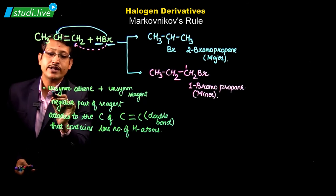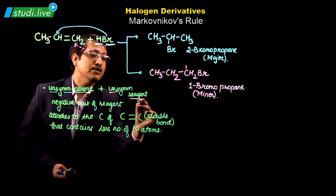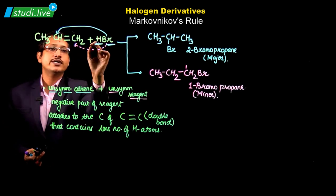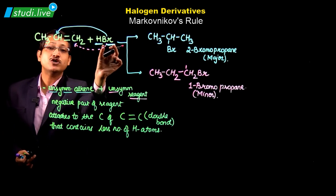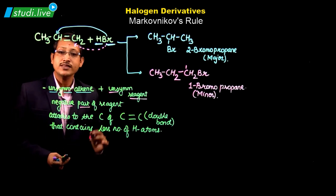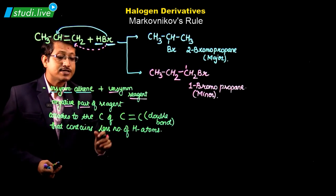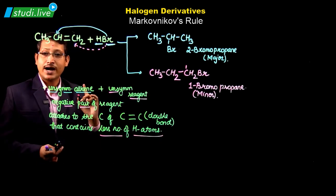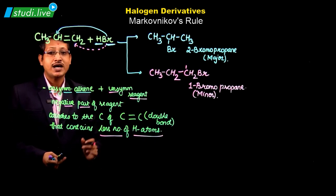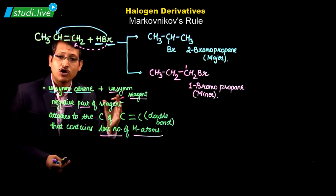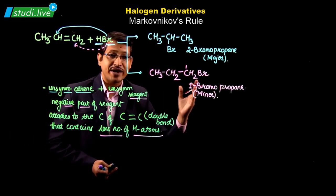The keywords of Markovnikov's rule: when an unsymmetrical alkene reacts with an unsymmetrical reagent — here HBr, where H⁺ and Br⁻ — the negative part of the reagent (Br⁻) attaches to the carbon of the carbon-carbon double bond which contains less number of hydrogen atoms. This is Markovnikov's rule, and this is the reason why 2-bromopropane is the major product and 1-bromopropane is the minor product.